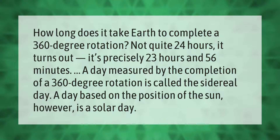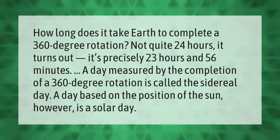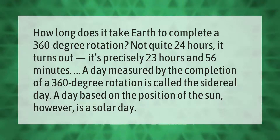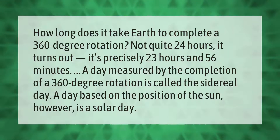How long does it take Earth to complete a 360-degree rotation? Not quite 24 hours — it turns out it's precisely 23 hours and 56 minutes. A day measured by the completion of a 360-degree rotation is called the sidereal day. A day based on the position of the sun, however, is called a solar day.